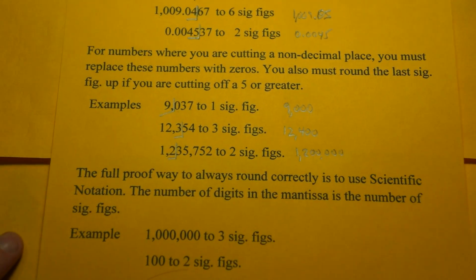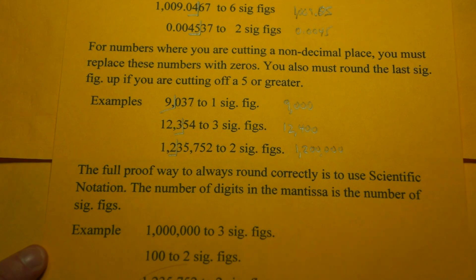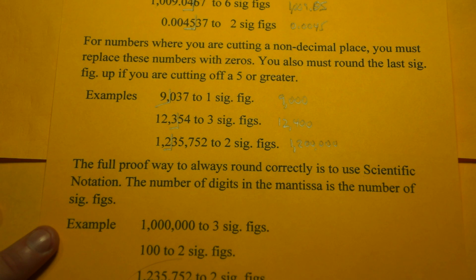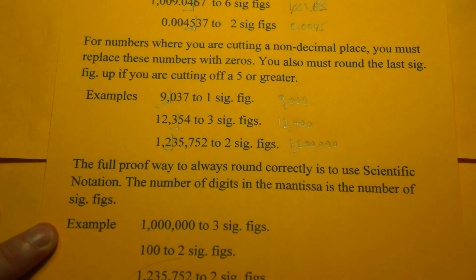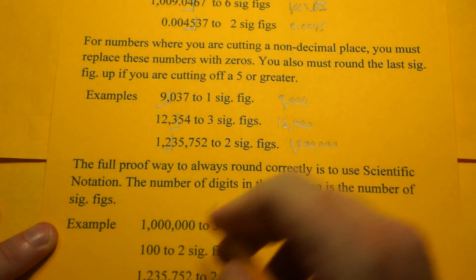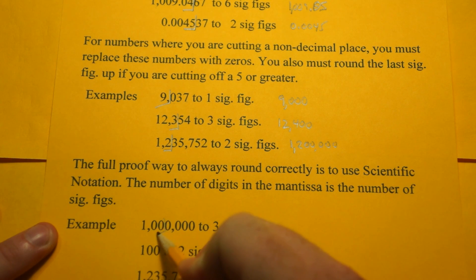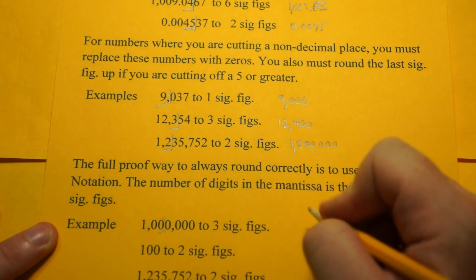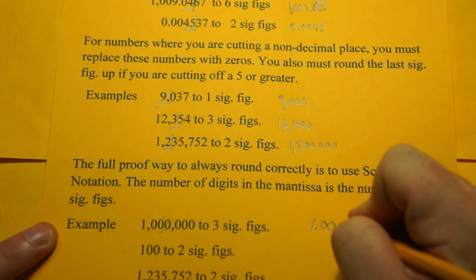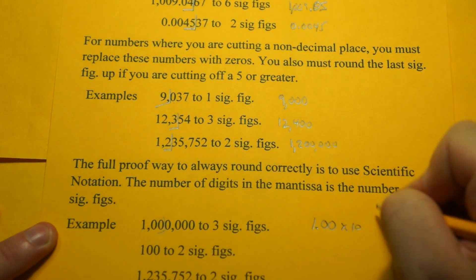Now, the foolproof way to always round correctly is to use scientific notation. The number of digits in the mantissa is the number of sig figs. So the mantissa is the number in the front of the exponent. So if I want 1,000,000 to 3 sig figs, well, I can't cut off these numbers and replace them with 0s. They're already 0s. So what I do is I put it into scientific notation. And since I have 3 numbers there, that's 3 sig figs, 10 to the 6th power.